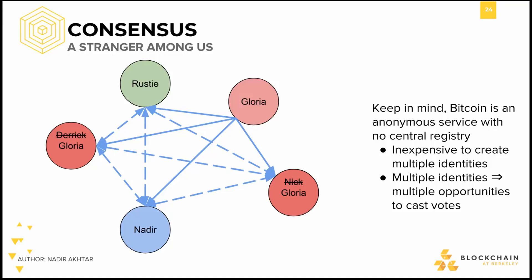We see that this is a problem when Gloria attempts to double spend because, with these extra identities under her control, she actually succeeds. She sends the transactions to Nadir and me, and we send these transactions to the rest of the network, and they all vote that both these transactions are valid. Because there are majority votes on both transactions being valid, we now have a lack of consensus about what the truth is. Gloria has broken Bitcoin all because it was easy for her to pose as multiple people and cast multiple votes, overwhelming Nadir and myself.